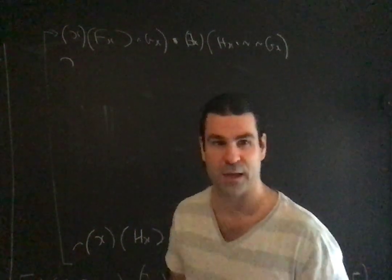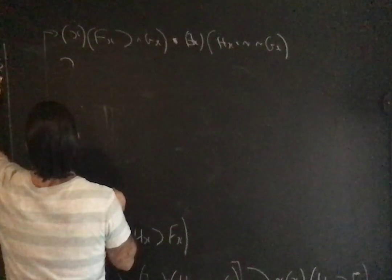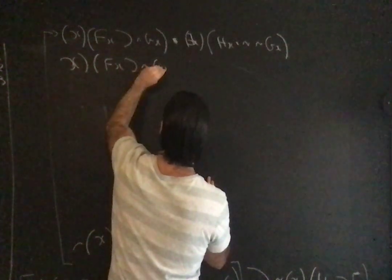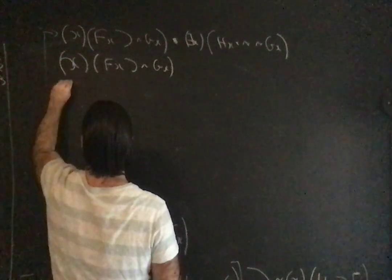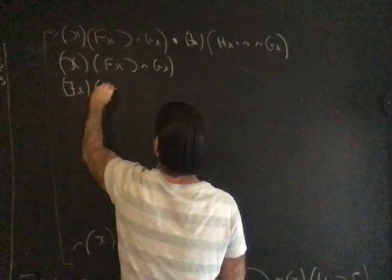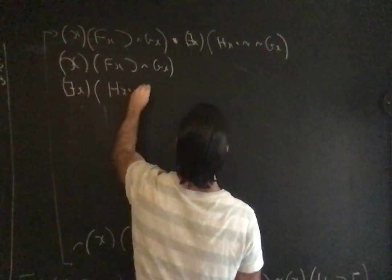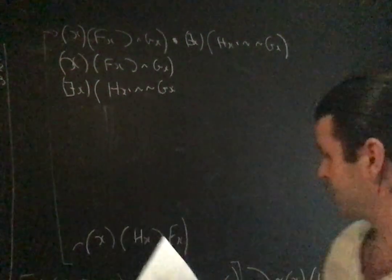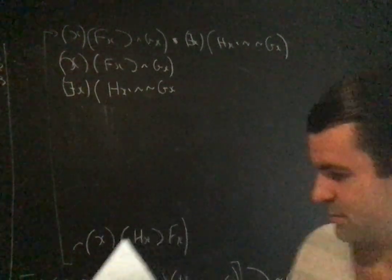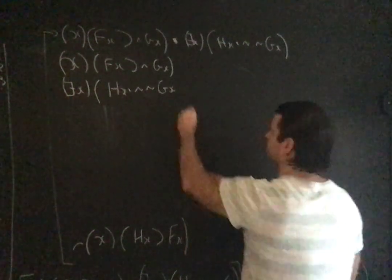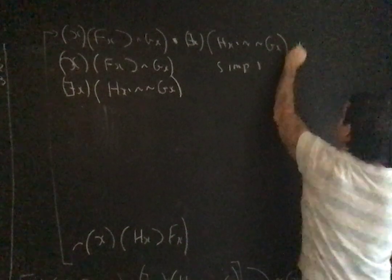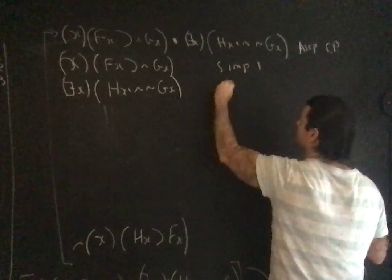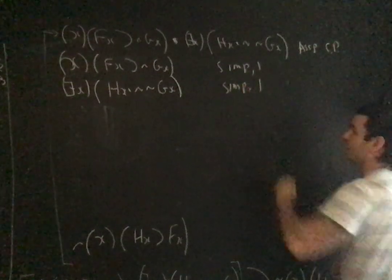You're given this and that, you're allowed to derive both parts separately. So two and three are going to be: for all x, fx hook not gx, and there exists an x which is hx and not gx. I've got it all right here: f, g, h, g, f, g, h, g. That's all right. This was assumption for CP. Simplification one.